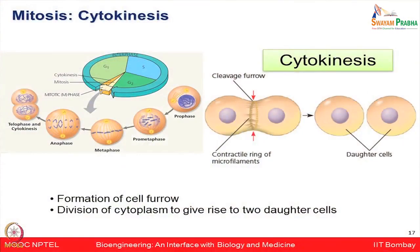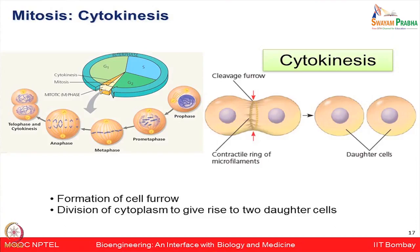To review: we covered prophase, prometaphase, metaphase, anaphase, telophase, and cytokinesis — showing completely how from one cell two daughter cells are produced having the same nuclear contents. This ensures the body is growing and sufficient development is happening.